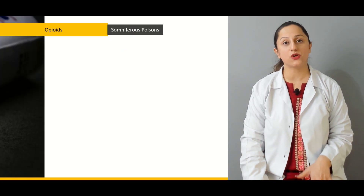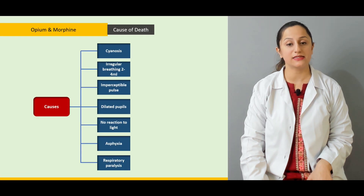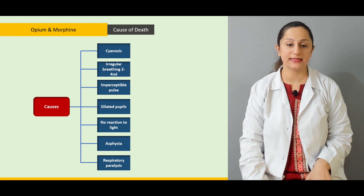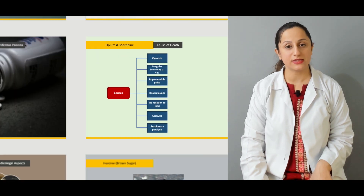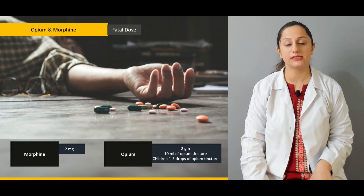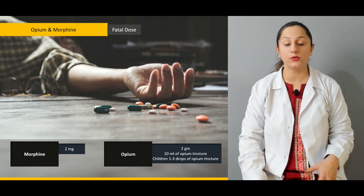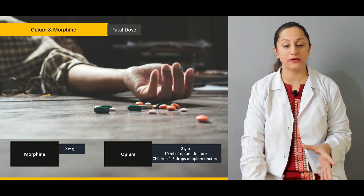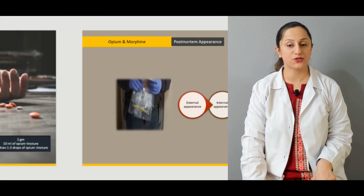Then we'll be dealing with the somniferous poisons, specifically the opioids, and mentioning the cause of death related to opioid poisoning — including cyanosis, irregular breathing, and imperceptible pulse, which are the most important and specific clinical features. We'll discuss the fatal doses and compare them within this group, covering morphine and opium — how they differ and what the specific fatal doses are for children.